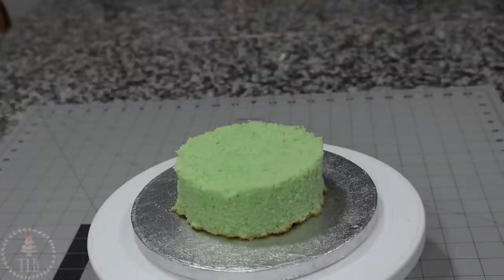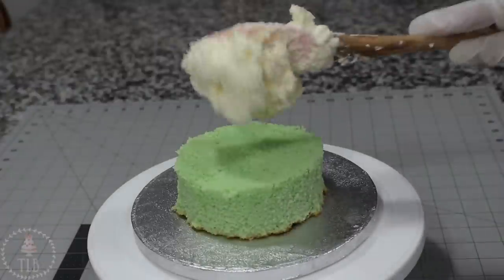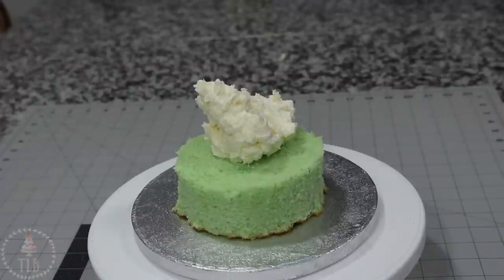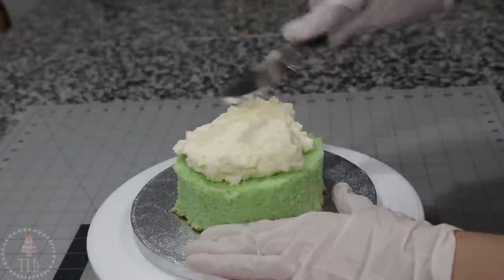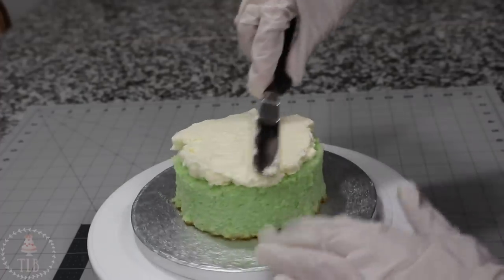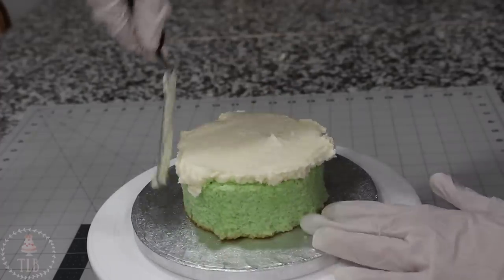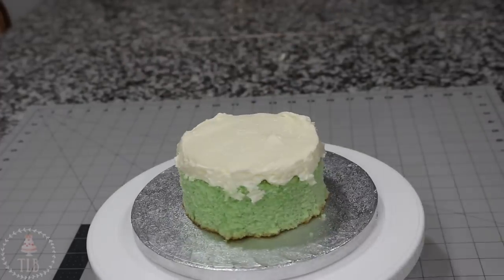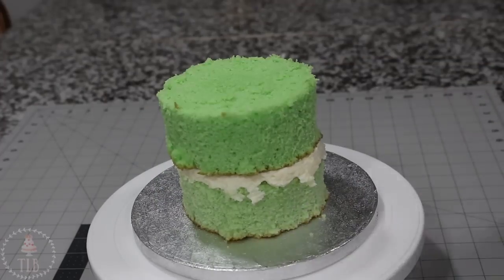I'm starting out with three five-inch cakes that I have leveled and I did dye them different shades of green just as an extra little St. Patrick's nod. I'm stacking those up with some vanilla buttercream in between and just using my small offset spatula to make sure my buttercream is nice and level before I add the next layer.